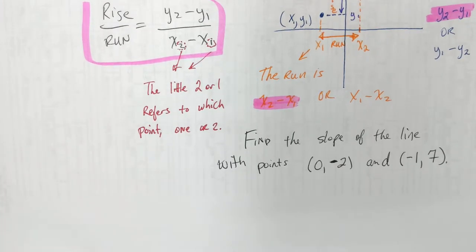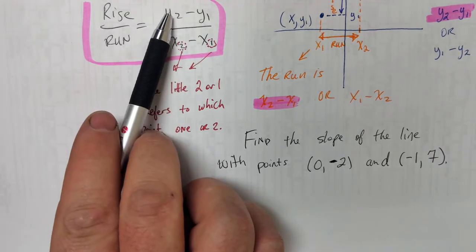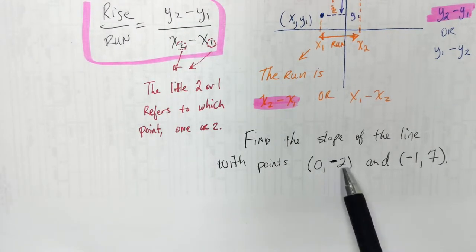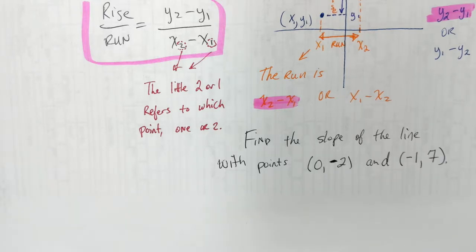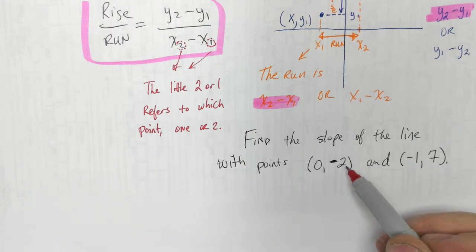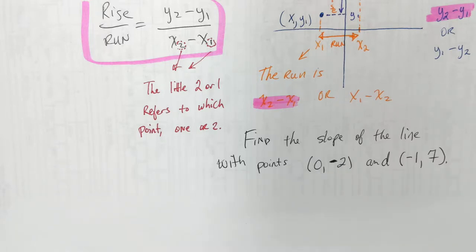The tricky thing about this: we don't know which one's number 1 and which one's number 2. We have y2 and y1 — we don't know if this is y2 or y1. It doesn't matter. You just pick one. But once you pick, you can't switch.